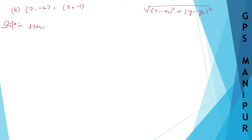So here, x1 is equal to 7, this one. x2 is equal to 3. y1 is equal to minus 2. And y2 is equal to this second number, that is minus 1.